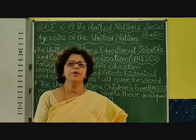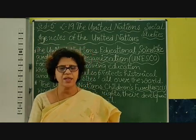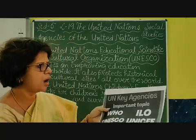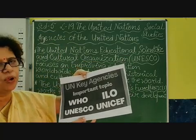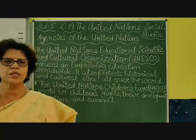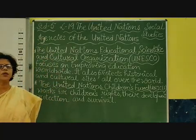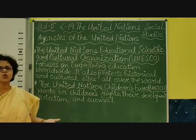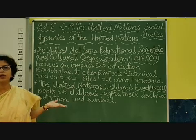Hello, good morning children. We are talking about the different agencies of the United Nations. The key agencies of the United Nations are UNESCO, UNICEF, WHO, ILO, FAO, and others like the World Bank will also be discussed. Now we are going to discuss two important agencies of the United Nations, which are working under the Social and Cultural Organization, one of the main organs of the UN.